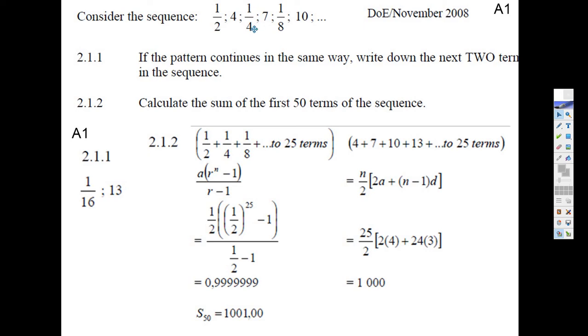It would kind of look like a geometric sequence where R was a half and A1 is a half. And then the other numbers, 4, 7, 10 - hey, that's just a simple arithmetic sequence, so that's not so hard.